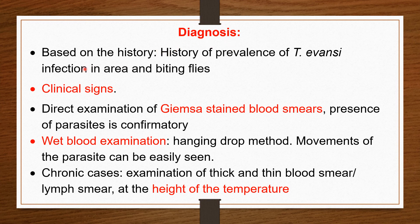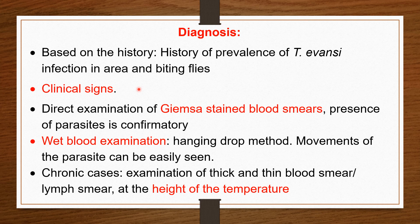Diagnosis is based on history — the history of presence or prevalence of Trypanosomiasis infection in an area and presence of biting flies in an area. The diagnosis is also based on characteristic clinical signs, which we have already seen in previous slides. The important and confirmatory diagnosis is direct examination of Giemsa-stained blood smear, where the clinician can see the trypanosomes in the smear. Presence of the parasite is confirmatory.